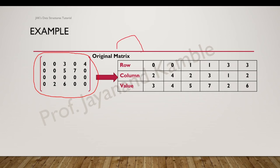The original sparse matrix and its triple data structure representation are shown here. When we obtain its transpose we interchange the row and column values, so the column value becomes the row value and vice versa. If we observe carefully, the original representation is in increasing order of row numbers: row 0, then row 1, then row 3. However, after interchanging rows and columns the new row values become 2, 4, 2, 3, 1, 2 — clearly not in sorted order.